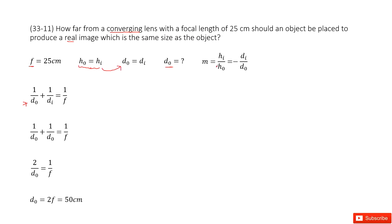Why? Because we have a definition about m magnification. It tells us that h_i over h_0 equals negative d_i over d_0. If h_0 equals h_i, this one equals 1. So that means d_i and d_0 are equal.